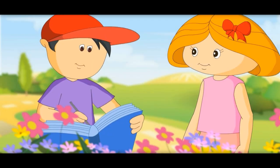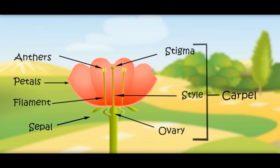Let us revise now. Male parts are anthers and filaments. Female parts are stigma, style, and ovary. When pollen from anthers falls on the stigma, it goes down to the ovary where a reaction happens and fruit is made. I can also make fruit from flowers — I would take pollen and put it on the stigma and fruit would be made.